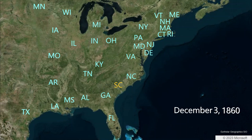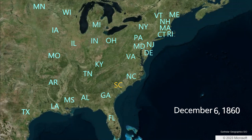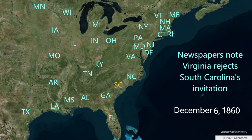Nevertheless, on December 3rd, delegates to the South Carolina Convention have been selected. So South Carolina, just one month after Lincoln's election, has gone from authorizing a convention to selecting people to be at that convention. On December 6th, the Anderson Intelligencer — the newspaper of Anderson Courthouse, South Carolina — reports that Virginia had declined South Carolina's invitation to join a convention of southern states.